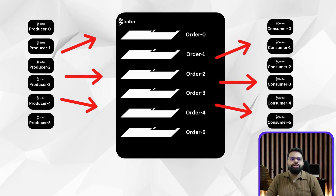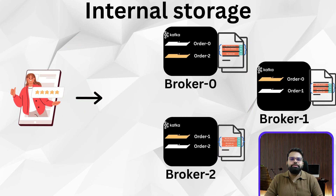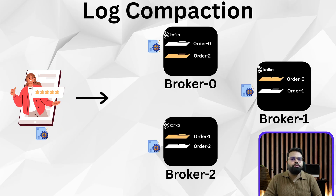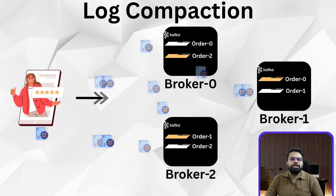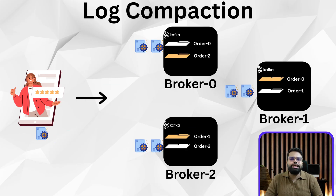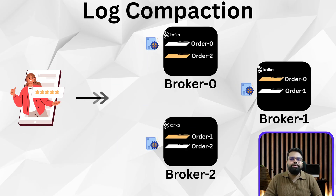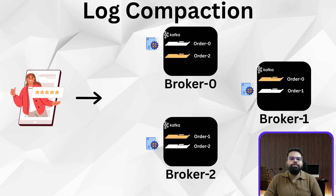Internally, Kafka stores data in segment files, usually 1 GB, plus index files for fast lookups. When a segment file fills up, Kafka rolls over a new one. Kafka also supports log compaction, where only the latest message for each key is retained — perfect for user state, inventory counts, or configuration updates.